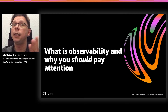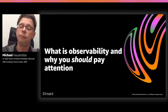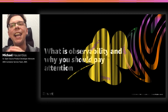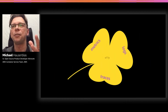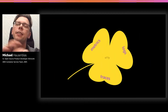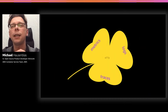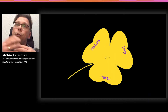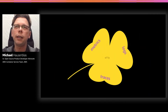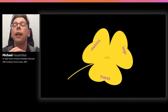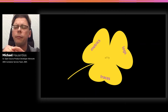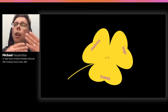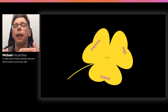What is observability and why you should pay attention to this topic? I live in Ireland and I thought I'd take a shamrock here to visualize and represent the three parts of observability, or to be more precise, of telemetry — the process of getting signals, collecting them from somewhere and bringing them together in a central place to analyze them. These three parts are logs, metrics, and traces.